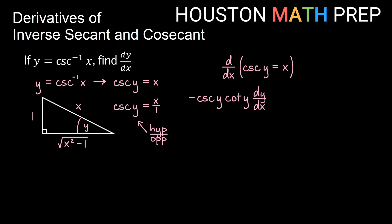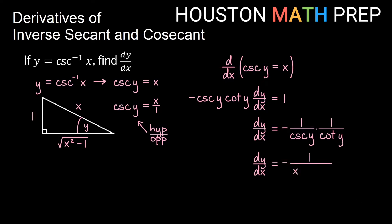Taking the derivative implicitly: the derivative of cosecant y — remember the derivative of cosecant of something is negative cosecant cotangent of that something. The chain rule gives us multiply by dy/dx. On the other side, the derivative of x is 1. Dividing both sides by the negative cosecant cotangent functions, dy/dx equals negative 1 over cosecant y times 1 over cotangent y. Since cosecant of y is x, this is negative 1 over x. The cotangent gives adjacent over opposite, which is the root over 1. So this looks very similar to the inverse secant derivative, but with a negative out front, as expected from the co-functions.